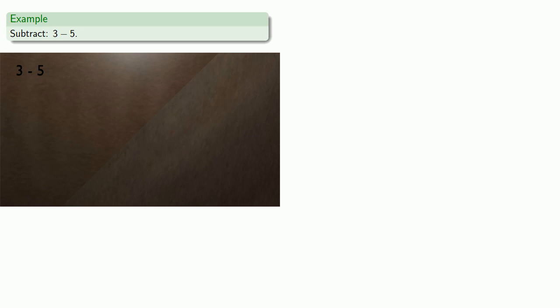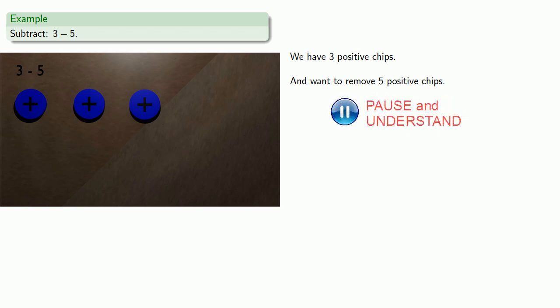So let's consider a problem like 3 minus 5. So we have 3 positive chips and want to remove 5 positive chips. But the problem is we don't have 5 positive chips. We need more positive chips.